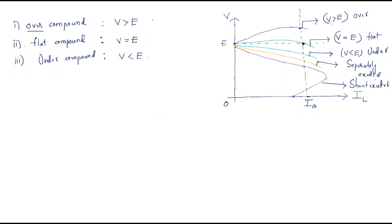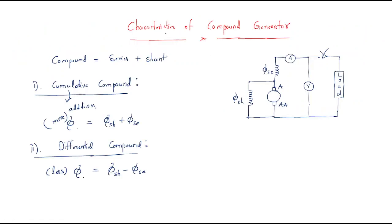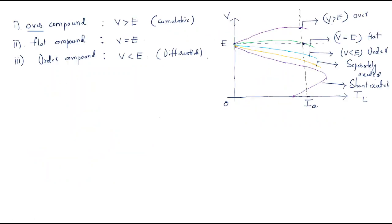In general, over compound corresponds to the cumulative type, and under compound corresponds to the differential type because the flux value decreases. These are the types, the classification, and the characteristics of compound generators — showing how load voltage varies with load current for different configurations.